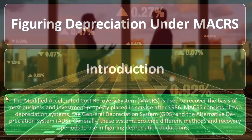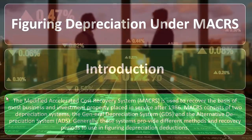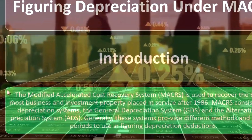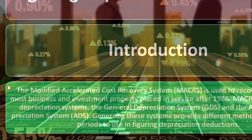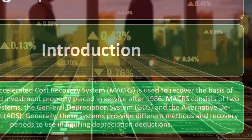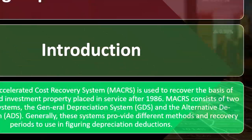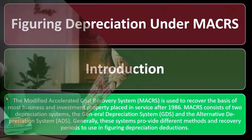MACRS consists of two depreciation systems: the General Depreciation System (GDS) and the Alternative Depreciation System (ADS). Generally, these systems provide different methods and recovery periods to use in figuring depreciation deductions.